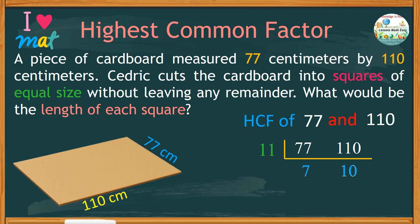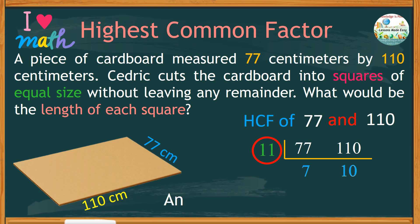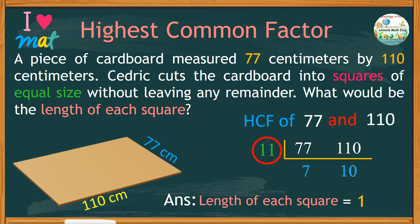So, the highest common factor of 77 and 110 is 11. Therefore, the answer to the question as to what would be the length of each square is 11 centimeters.